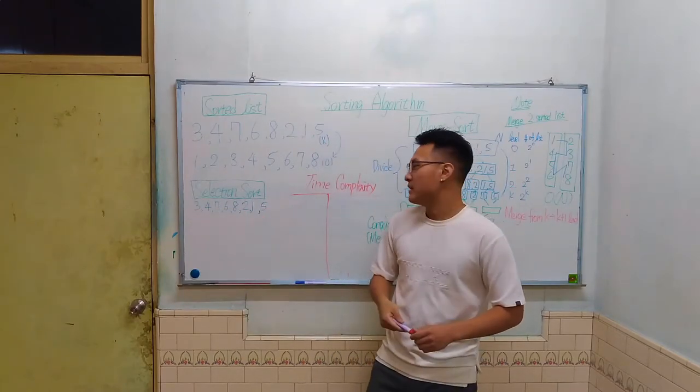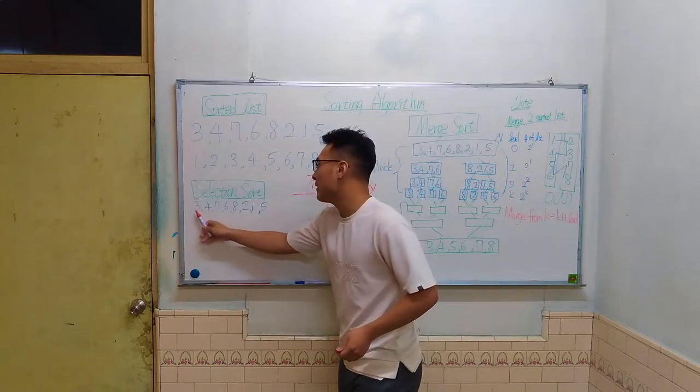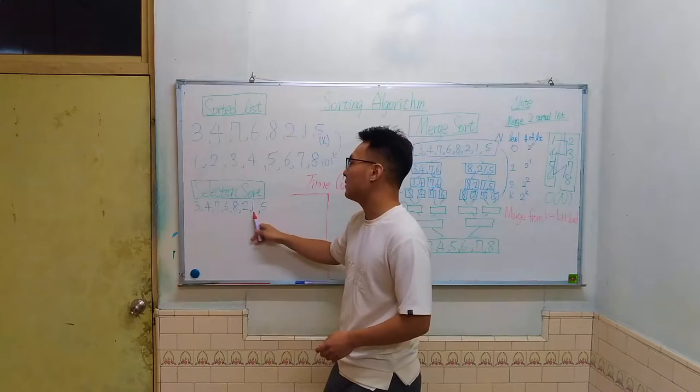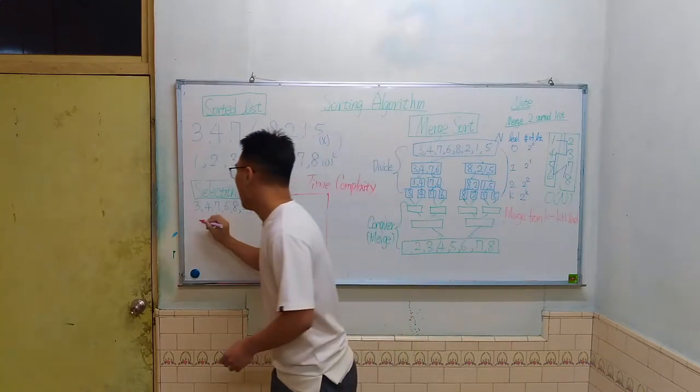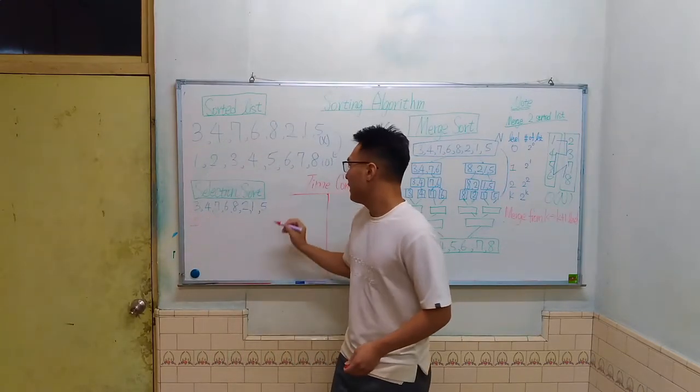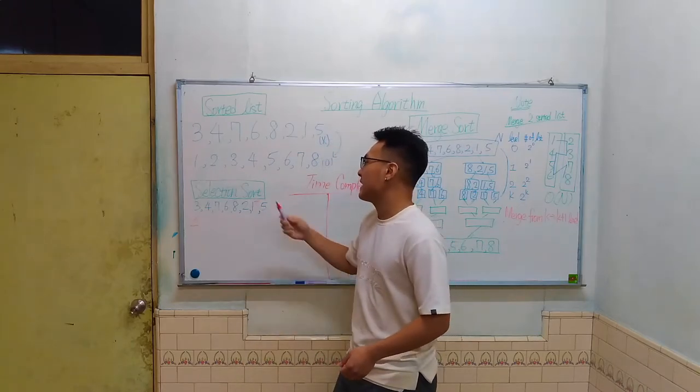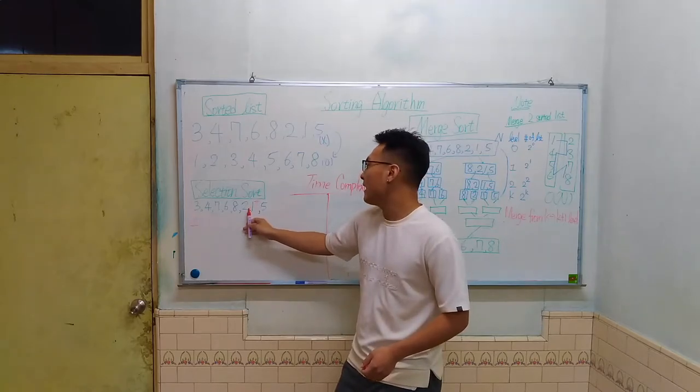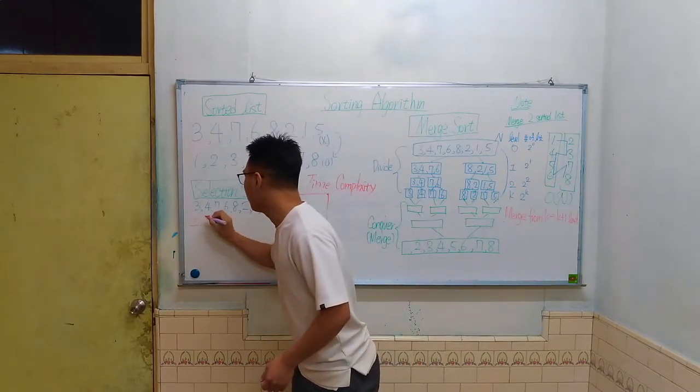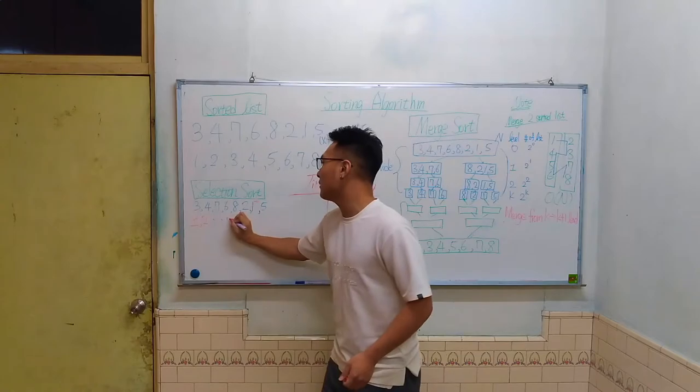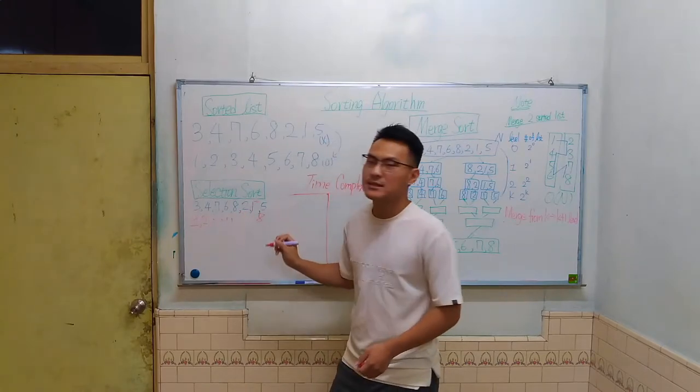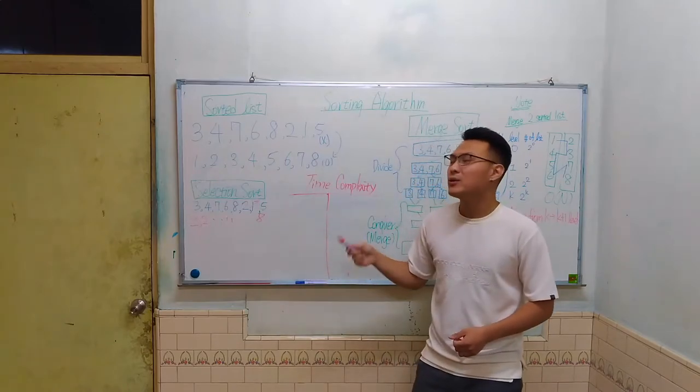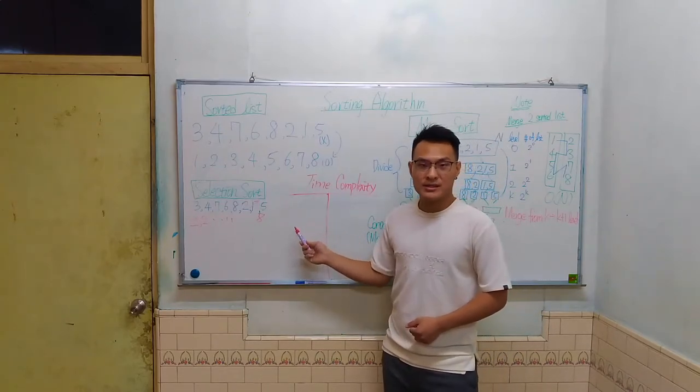So based on the rule I just mentioned, the first time after we visit every element in the list, we will find out that one is the smallest element. And we're going to put one here and remove it. And we're going to do the same thing and we'll find two is the smallest element in the remaining list. So we're going to put two here and so on until we find the last element. As you can see, selection sort is quite intuitive and easy to understand.